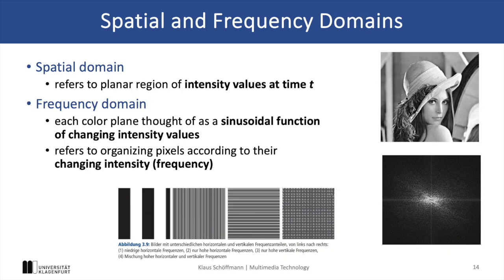It is also important to understand the difference between the spatial domain and the frequency domain. So far we have only covered the spatial domain, where each pixel contains an intensity value. However, we can also convert the pixel values to the frequency domain and store information about the pixel's rate of intensity change over neighboring regions. This is mainly done because it has benefits for lossy compression — one example being DCT, the discrete cosine transform — which will be covered in detail in later chapters of this lecture.